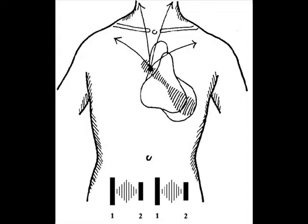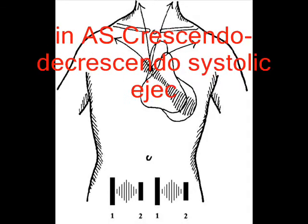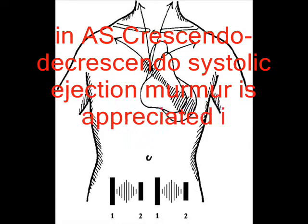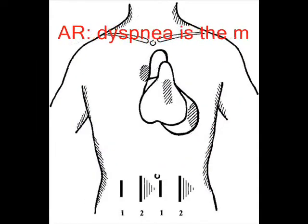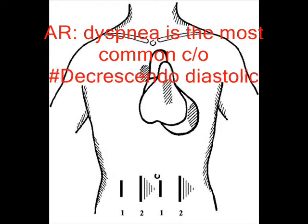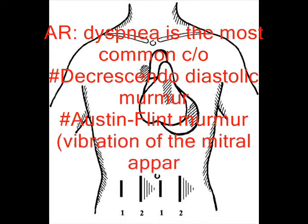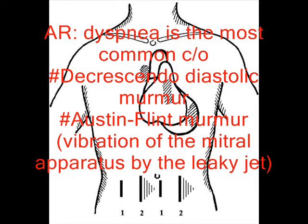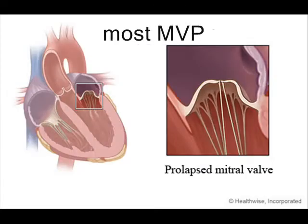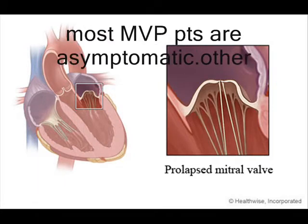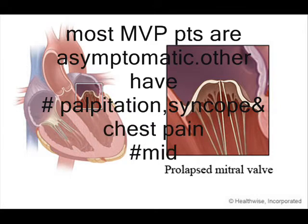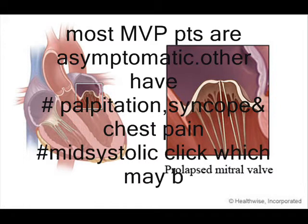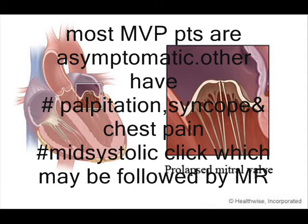The most common presentation of aortic stenosis is angina, and on auscultation a crescendo-decrescendo ejection murmur is heard at the second right intercostal space. Aortic regurgitation on the other hand presents with a decrescendo diastolic murmur and the Austin Flint murmur. Most mitral valve prolapse patients are asymptomatic; others have palpitations, syncope, or chest pain, and the characteristic mid-systolic click may be followed by a murmur of MR.